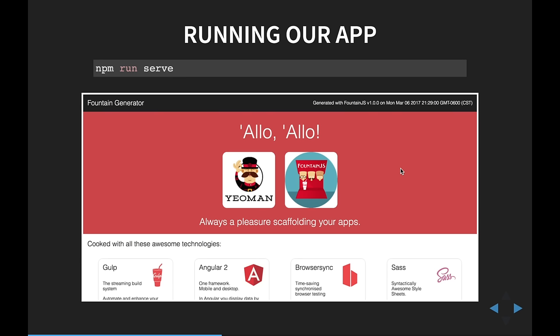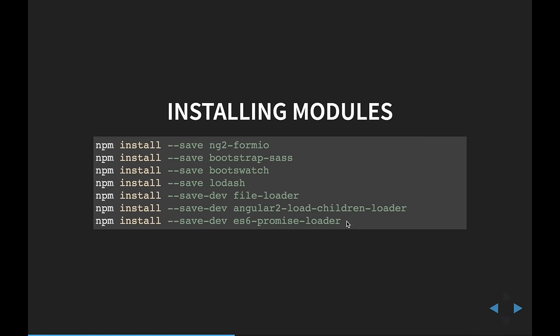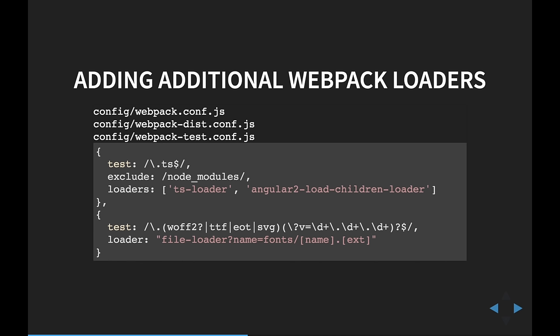Now that we have our application running, we need to install some modules. The first is ng2-formio, the FormIO integration module that also provides form renderings. We're also going to use Bootstrap Sass. Boot Swatch allows us to change the theme. Lodash is a utility Swiss Army knife library. We're also going to use some file loaders — Webpack has loaders that tell it how to build your application whenever it encounters a URL, such as font files. We need a font loader and a load-children loader for lazy loading within Angular 2.